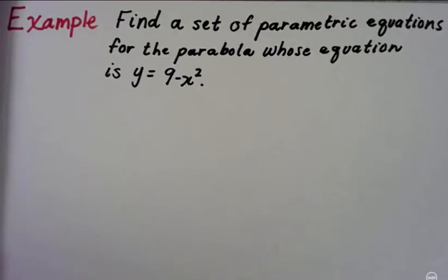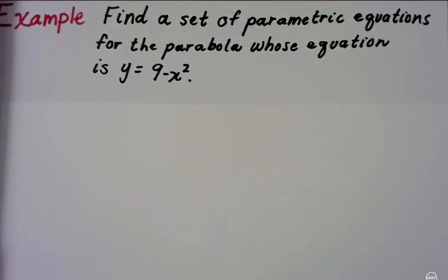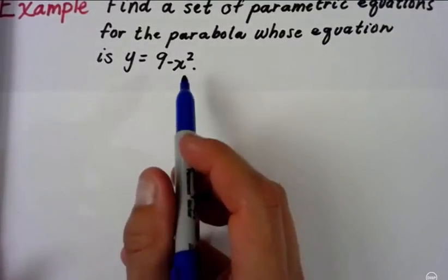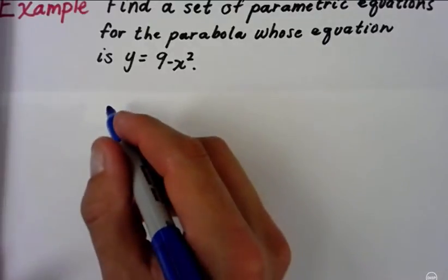We can do this in a variety of different ways. x is the independent variable, so one of the things we can do is just redefine our x value as, let's say, let x equal t.